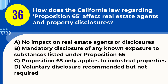Question 36. How does California law regarding Proposition 65 affect real estate agents and property disclosures? A. No impact on real estate agents or disclosures. B. Mandatory disclosure of any known exposure to substances listed under Proposition 65. C. Proposition 65 only applies to industrial properties. D. Voluntary disclosure recommended but not required. Answer: B. Mandatory disclosure of any known exposure to substances listed under Proposition 65. Explanation: California's Proposition 65 requires real estate agents to disclose any known exposures to chemicals or substances listed under the act that could cause cancer or reproductive harm.